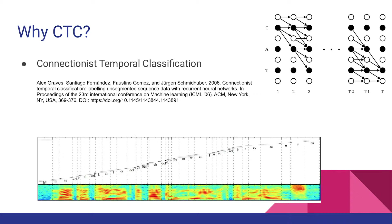The details of the CTC loss function are beyond the scope of this presentation, but I strongly recommend everyone doing automated speech recognition to read the paper. In short, the CTC maximizes the probability of the output sequence with a differentiable function that can be used to back-propagate the loss through the network and train it. The only limitation is that the output length must be less than the RNN input length.